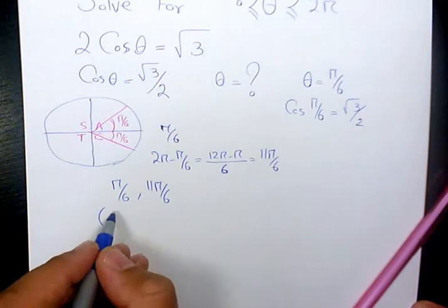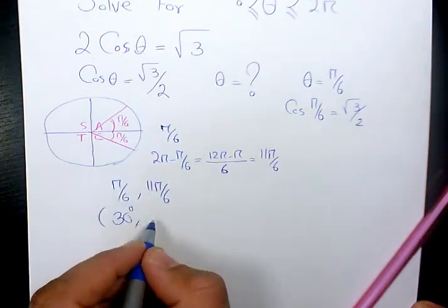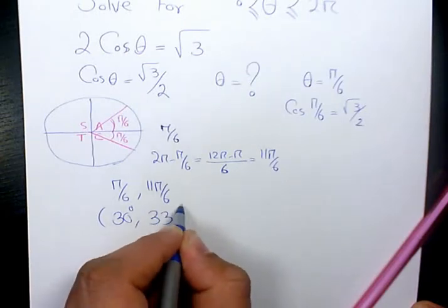If you want to write in terms of degrees, it's going to be 30 degrees. And here it's going to be 360 minus 30. That's going to be 330 degrees.